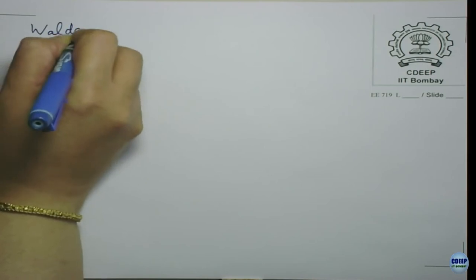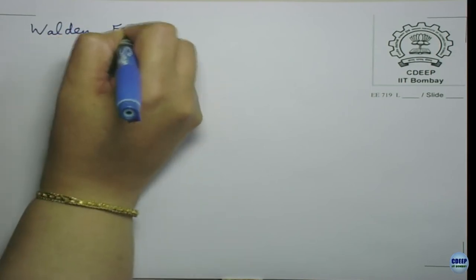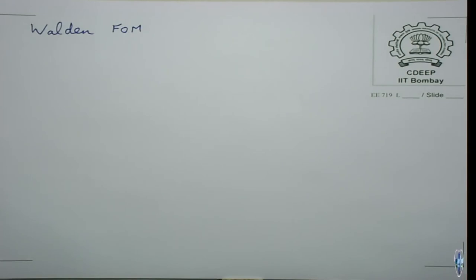There are two relatively old but still-used figures of merit: the Walden figure of merit and the Schreier figure of merit. I will derive them and then show Boris Murmann's ADC survey, which plots these FOMs and is updated annually on his website.